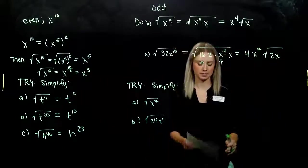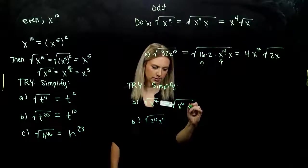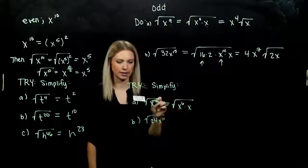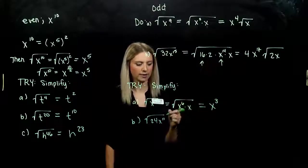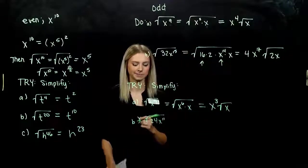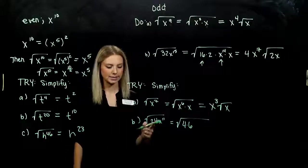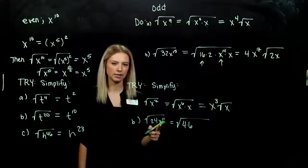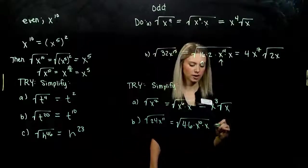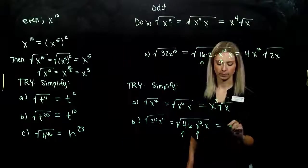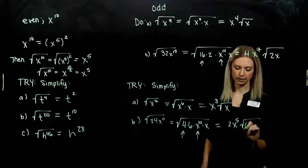Let's simplify two more. For √(x⁷): 7 is odd, not divisible by 2, but we can break it into x to the sixth and x — adding those gives us 7. The perfect square evaluates out as x to the third (divide 6 by 2), and our leftover is √x. For √(24x¹¹): 24 breaks into 4 and 6 — 4 is a perfect square. x to the eleventh breaks into x to the tenth and one left over. Evaluating: square root of 4 is 2, square root of x¹⁰ is x to the fifth, and leftovers are √(6x).